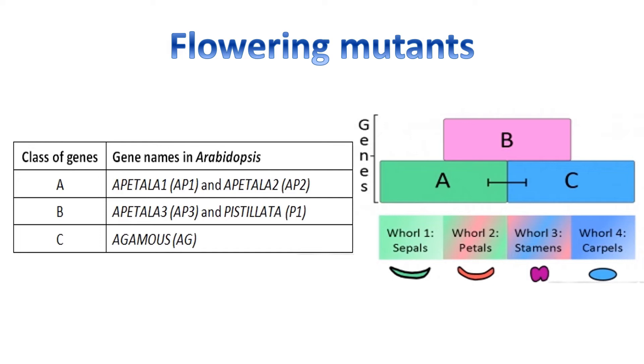Now let us look at the mutant phenotypes. A mutant of class A genes cannot develop class A-dependent floral organs, that is sepals and petals, and the C activity spreads leading to the formation of only stamen and carpel. The genes responsible for this mutation are APETALA1 and APETALA2.